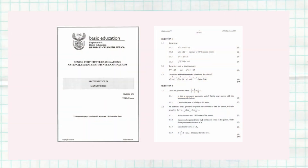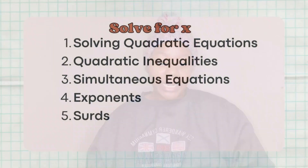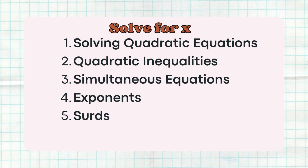We're going to talk about the different types of questions that you can find under Solve for X. Solve for X is found in Paper 1, Question 1 from the first paper. The types of questions you can find there: the first one is the quadratic equation, the second one is quadratic inequality, and the third one is simultaneous equation.